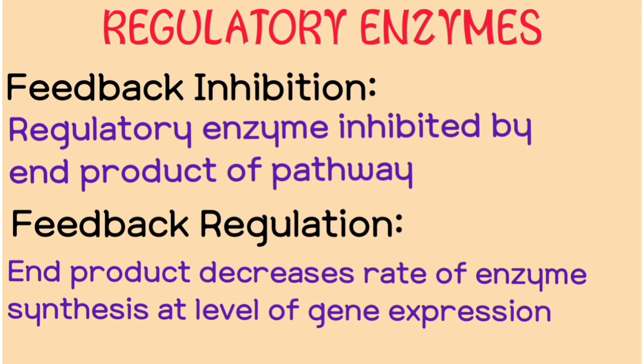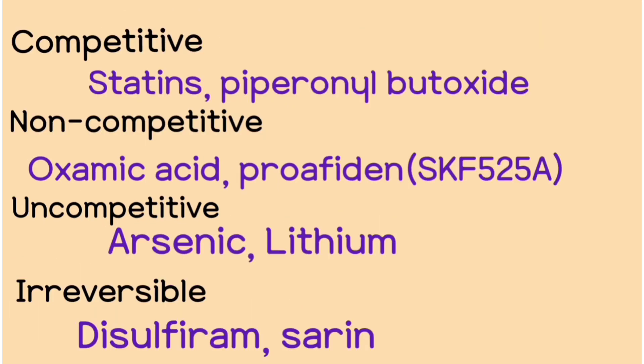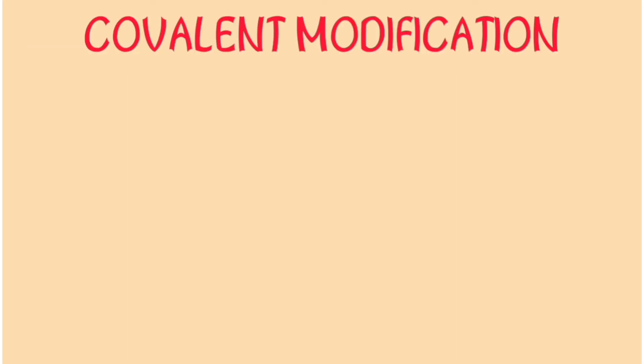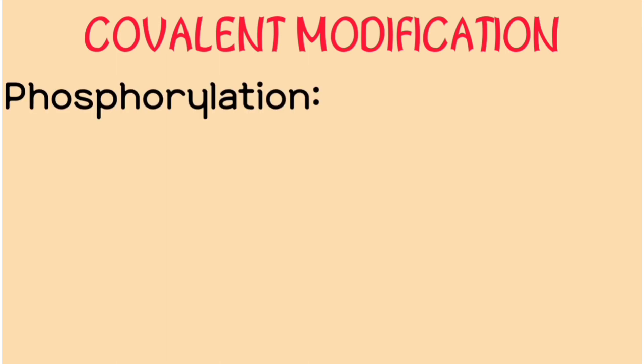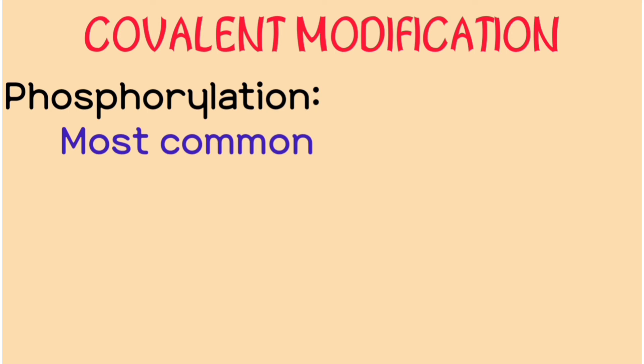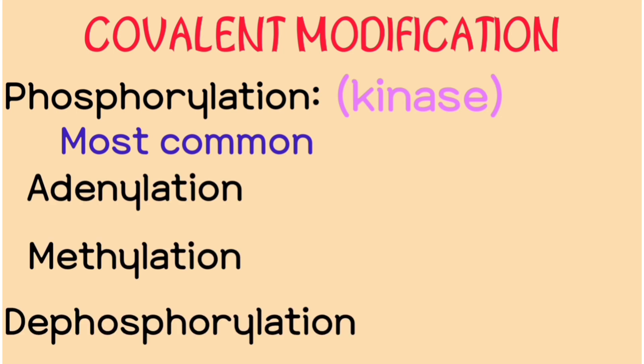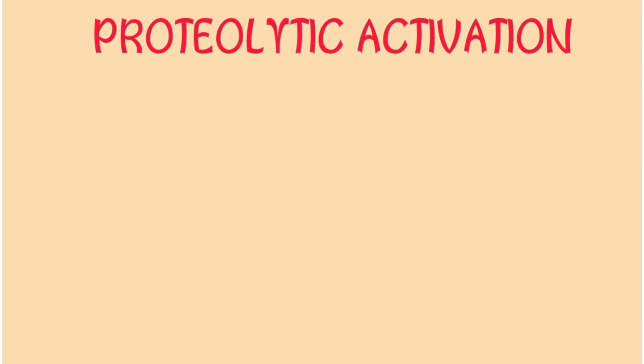Now that we've looked at all these types of enzyme regulation, on this page we can see the examples I promised — you can pause to look at them. Next, under enzyme regulation, we have covalent modification of enzymes after biosynthesis. Some of these modifications include phosphorylation — the most common one, catalyzed by enzyme kinase — as well as adenylation, methylation, and dephosphorylation. All these modifications could either increase or decrease enzyme activity.